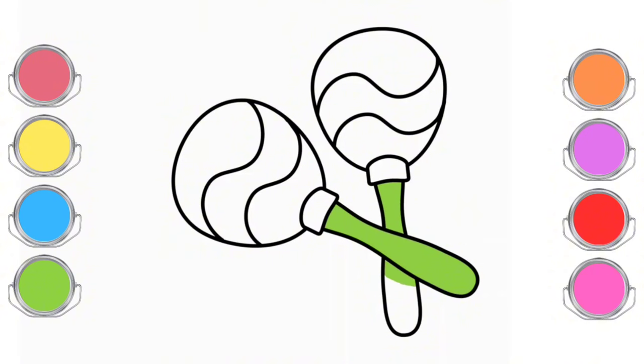Maracas are usually made of small balls filled with seeds or tiny beads. When we shake them, the seeds or beads inside the balls rattle and create a tinkling sound. This makes maracas a very lively and enjoyable musical instrument.